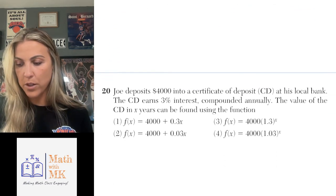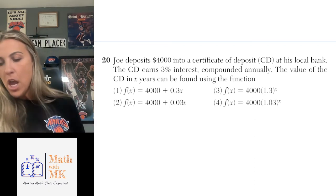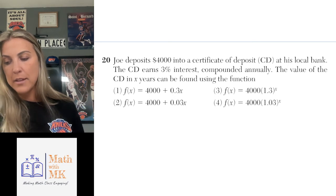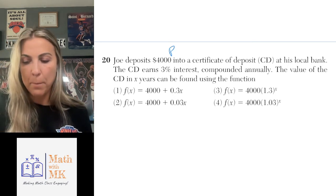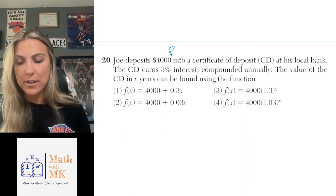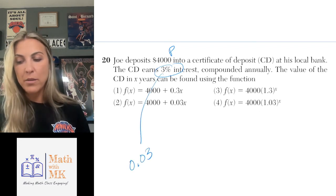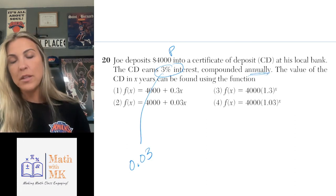The last question is a word problem about depositing money and earning interest. Joel deposits $4,000 into a certificate of deposit at a local bank. The initial deposit is our principal amount. The CD earns 3% interest — let's convert that to 0.03 — compounded annually. The value of the CD in x years can be found using which function?